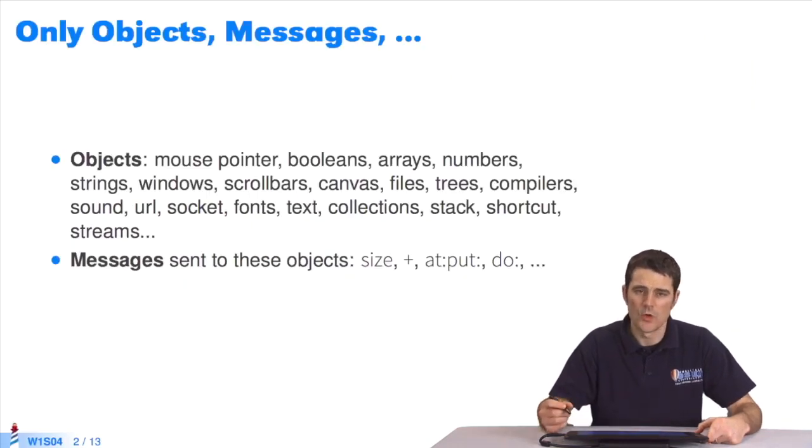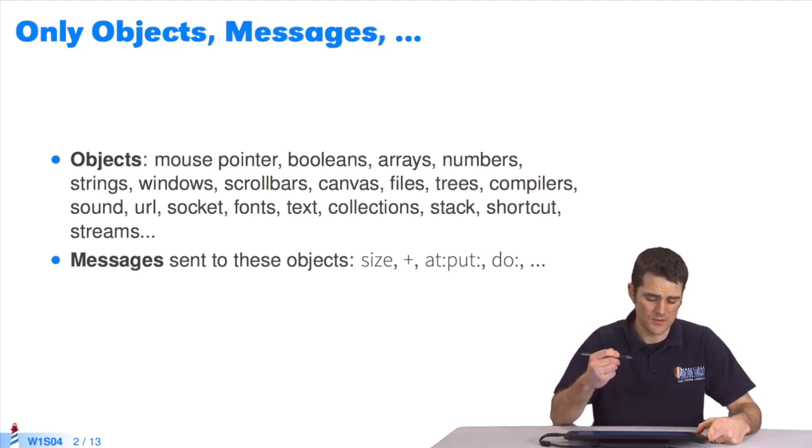In Pharo, there are only objects and messages. There are lots of objects to represent the mouse pointer, booleans, arrays, numbers, strings, windows, scroll bars, and so on. Even compilers, system objects such as sockets, fonts, collections, and so on.